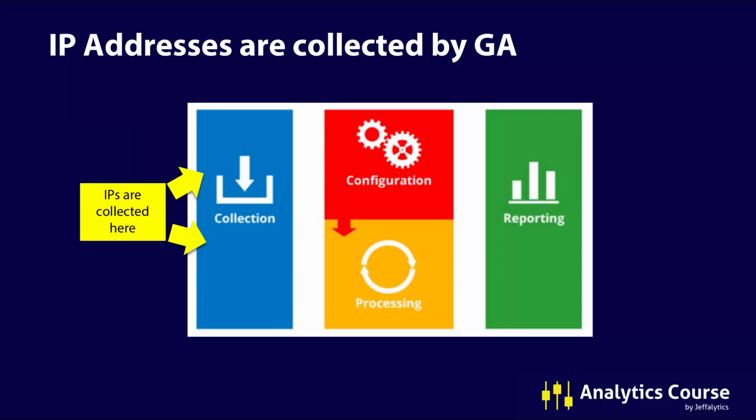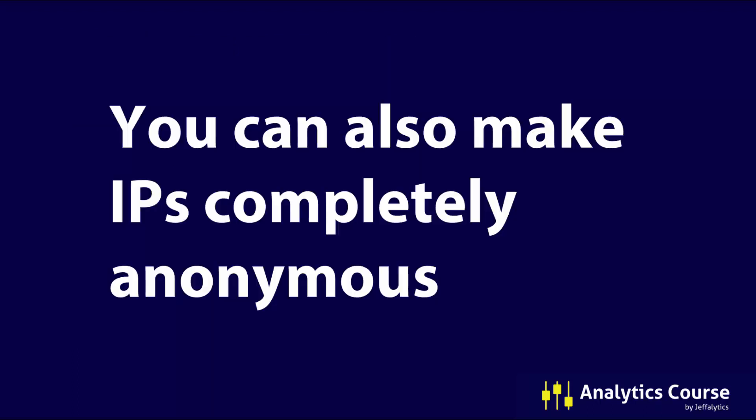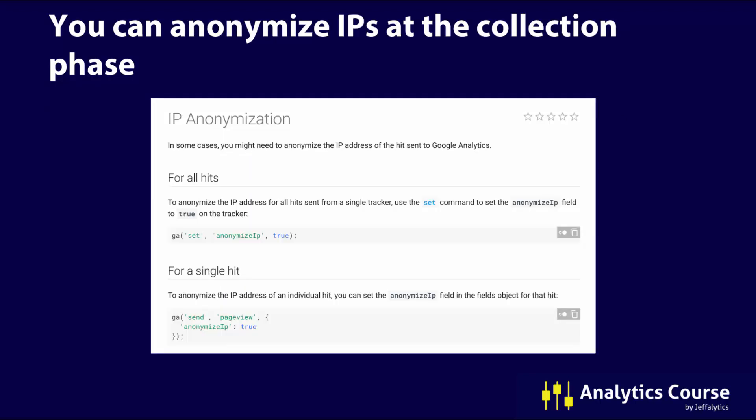Each of these collection methods has the ability to collect an IP address. They want to collect an IP address at the collection point because it's an important way of distinguishing different characteristics about that traffic. You also have the ability to completely make your IPs anonymous, even at the collection point. There's a little function you can put into your Google Analytics — using analytics.js — where you can anonymize IP addresses for all hits or just a single hit. If somebody opts out of tracking on your site, you could anonymize the IP for that hit moving forward.